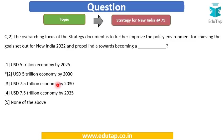We can now easily answer this question: we have to propel India towards becoming a USD 5 trillion economy by 2030. So the answer is option number 2.